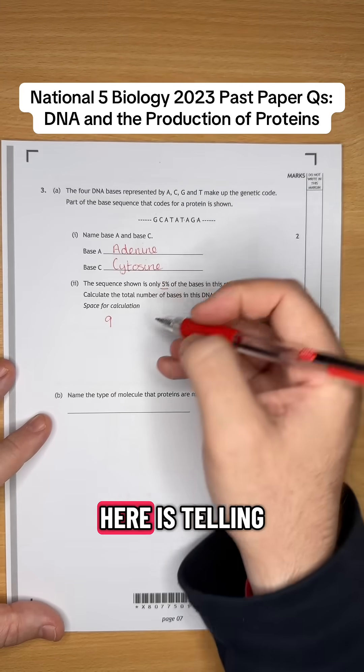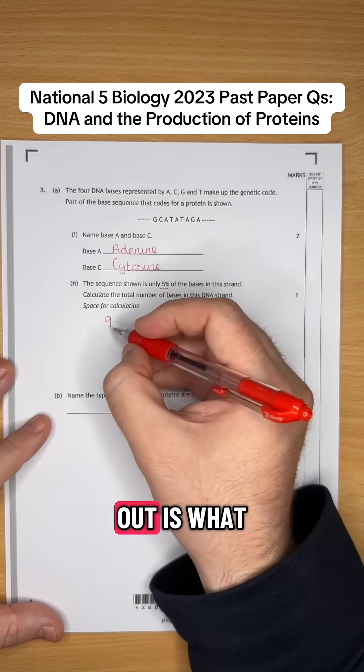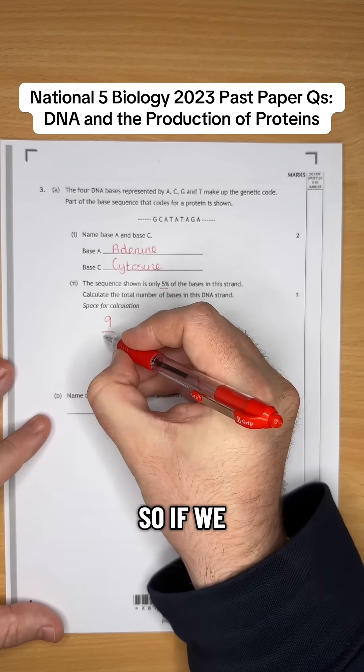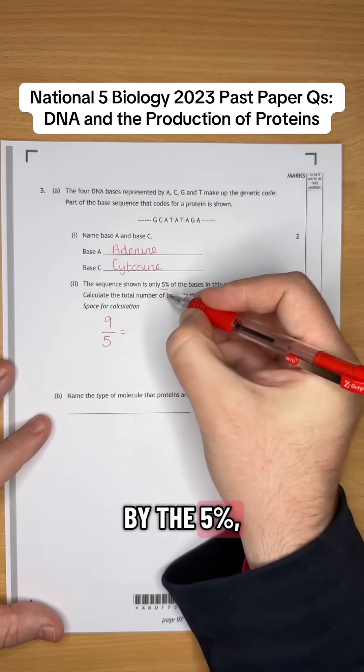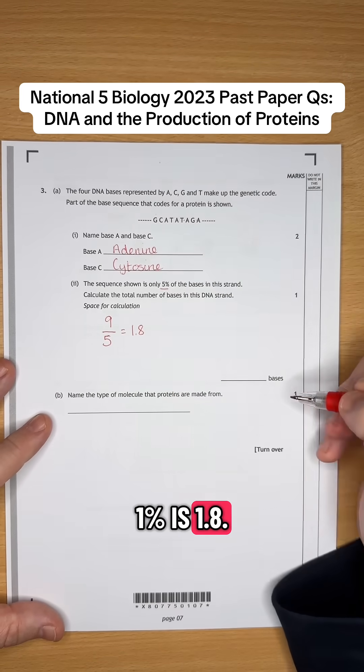So what we need to work out is what 1% is. So if we do 9 divided by 5%, that should give us 1%. And 1% is 1.8.